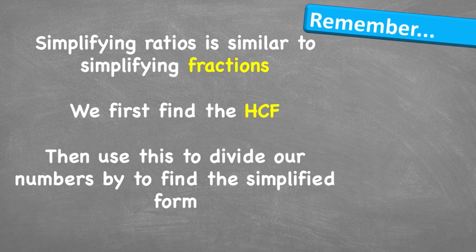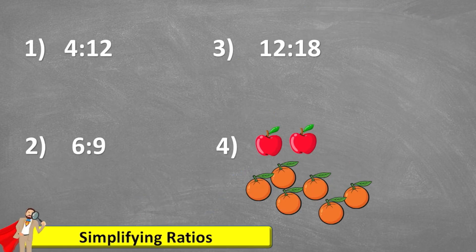There you go — that is everything you need to know about simplifying ratios. Remember, simplifying ratios is similar to simplifying fractions. We first find the highest common factor, and then we use this to divide our numbers by to find the simplified form. Here are 4 questions for you to have a look at — same format as before. Put your answers in the comments section. Press pause on the video now. Good luck.